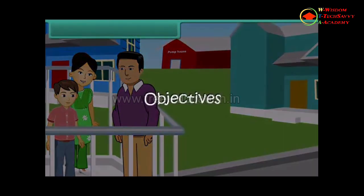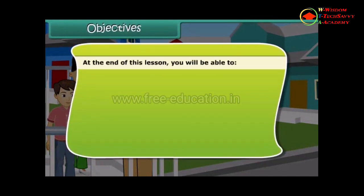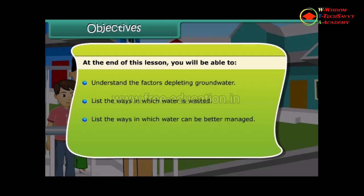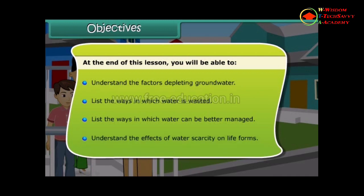Objectives. At the end of this lesson, you will be able to: understand the factors depleting ground water; list the ways in which water is wasted; list the ways in which water can be better managed; and understand the effects of water scarcity on life forms.